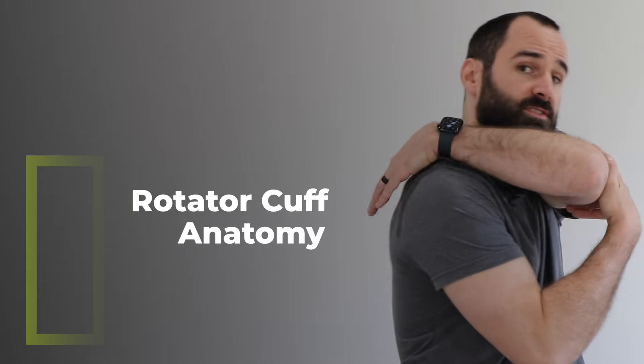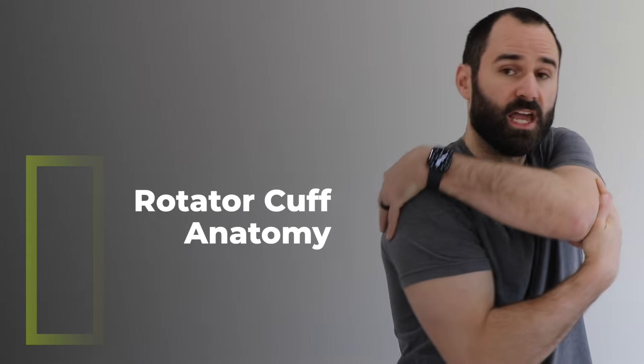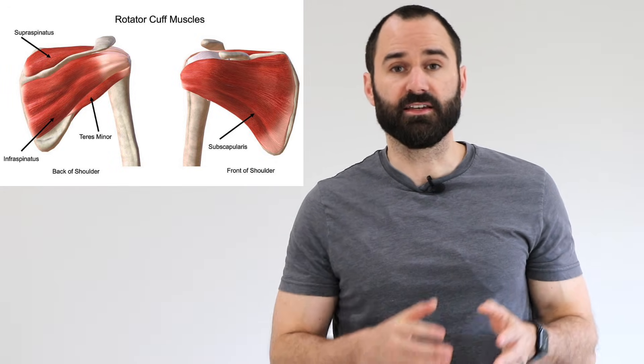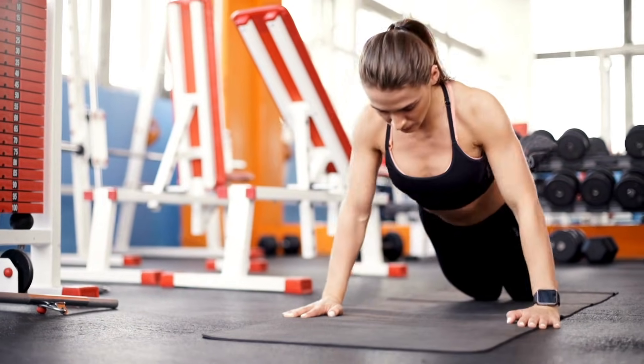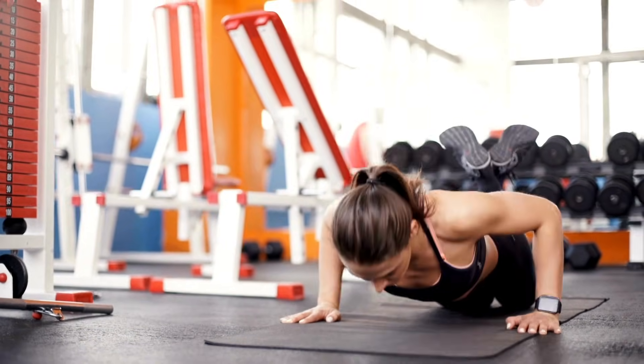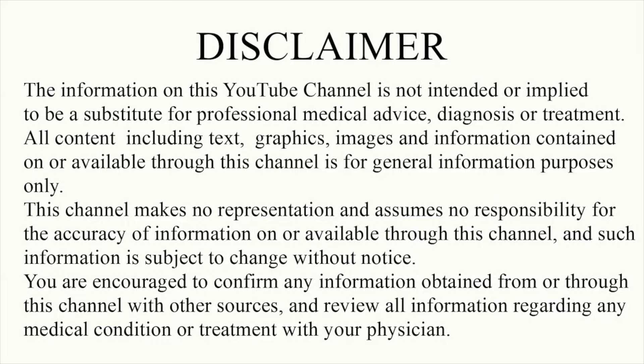Your rotator cuff are four muscles on the back of your shoulder blade that come around your shoulder: the supraspinatus, the infraspinatus, the subscapularis, and the teres minor. These muscles work as a group to functionally and dynamically stabilize your shoulder with a ball and socket joint. The important thing to note is the supraspinatus muscle and tendon, the one on the top, is the one most commonly affected by the following conditions.